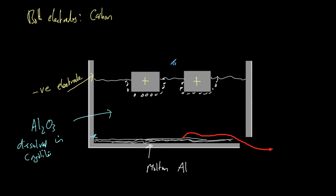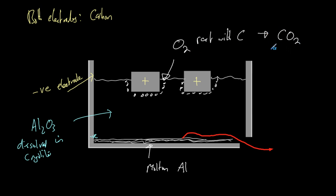Oxygen does have obvious uses such as oxygen tanks. However, because this happens at very high temperature, the oxygen can actually react with the carbon electrodes, producing carbon dioxide. This means the carbon electrodes are burning away and breaking down, so they need to be replaced periodically. That increases costs.